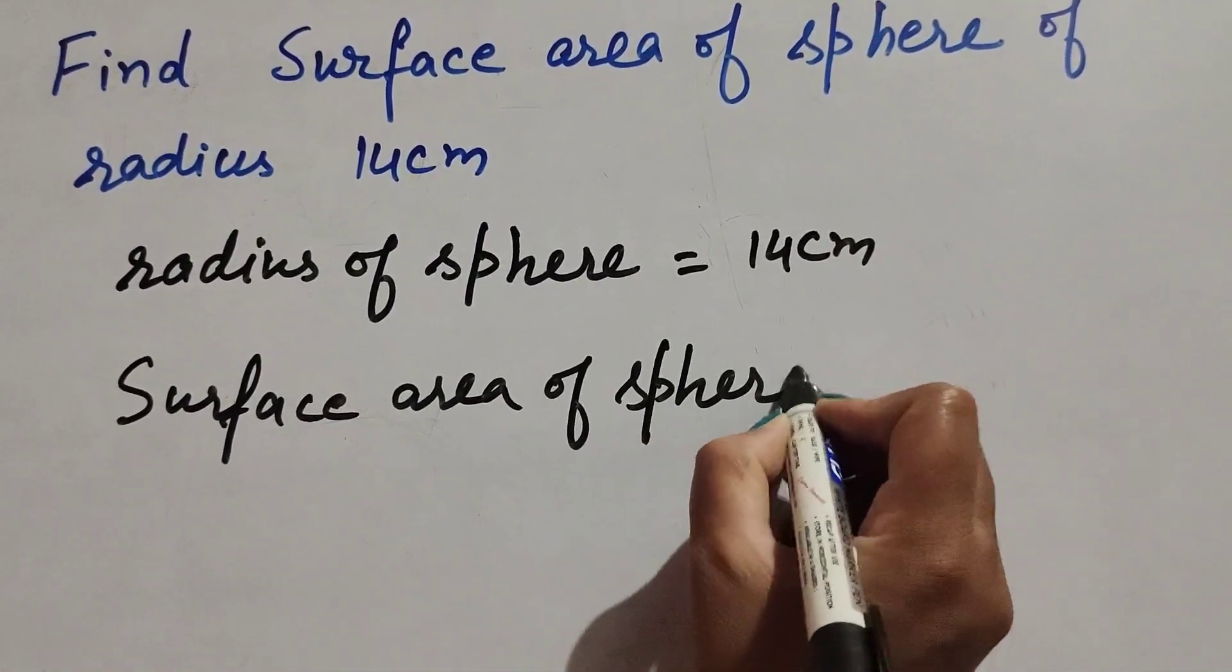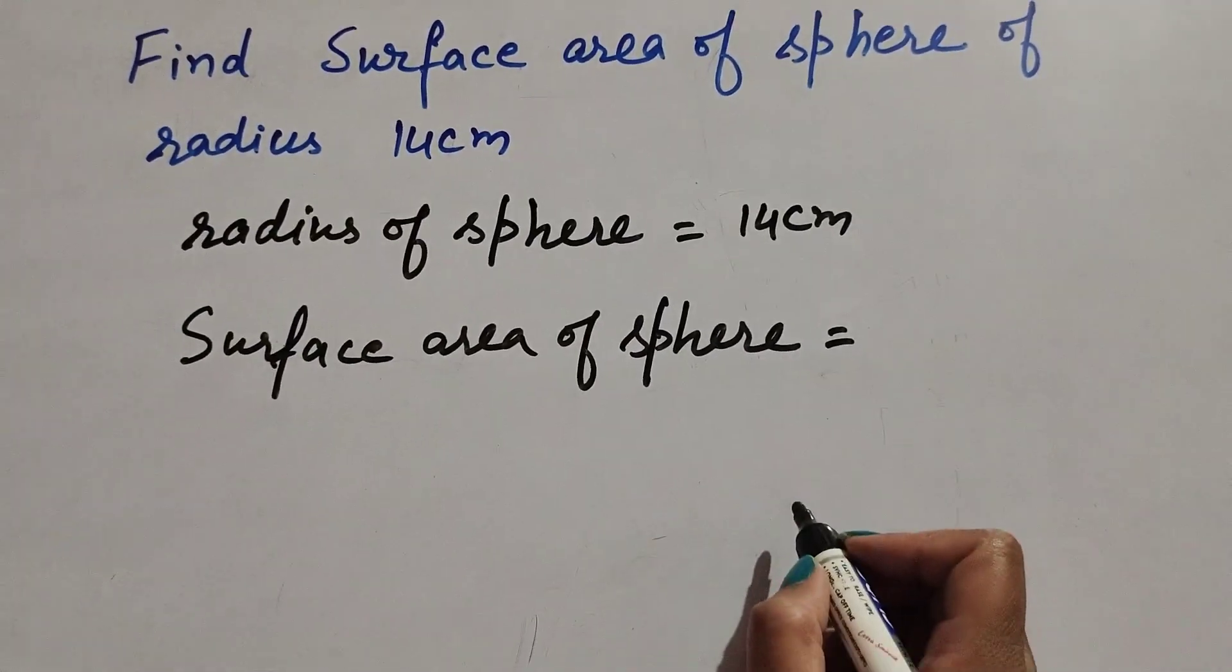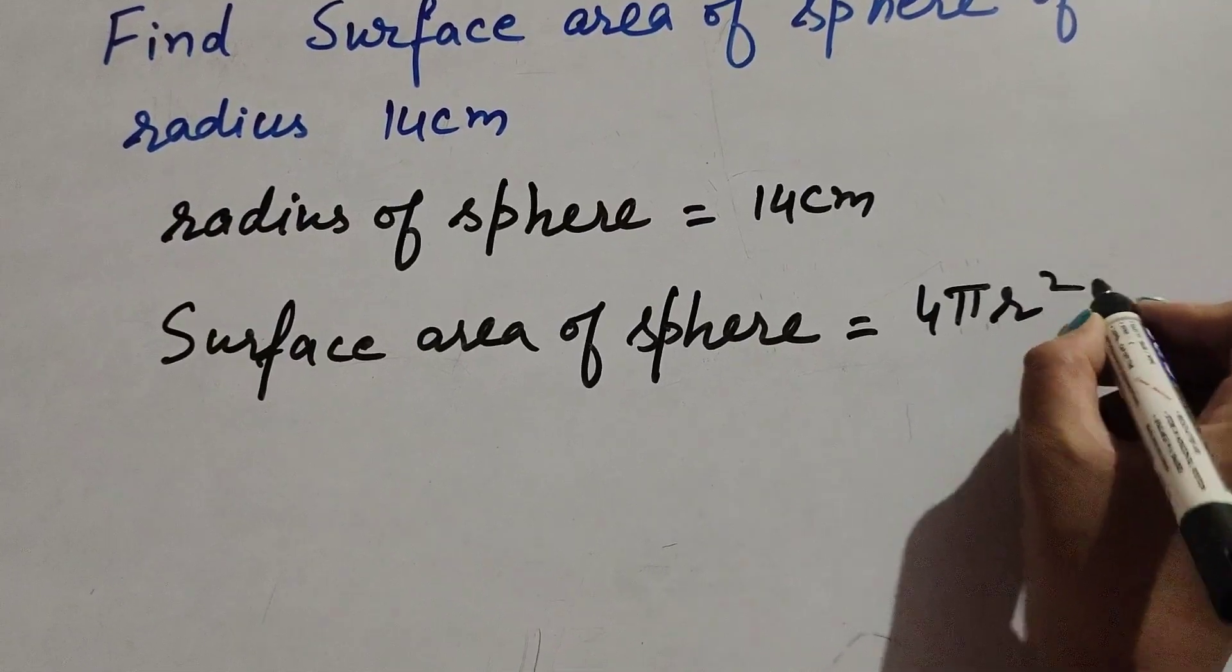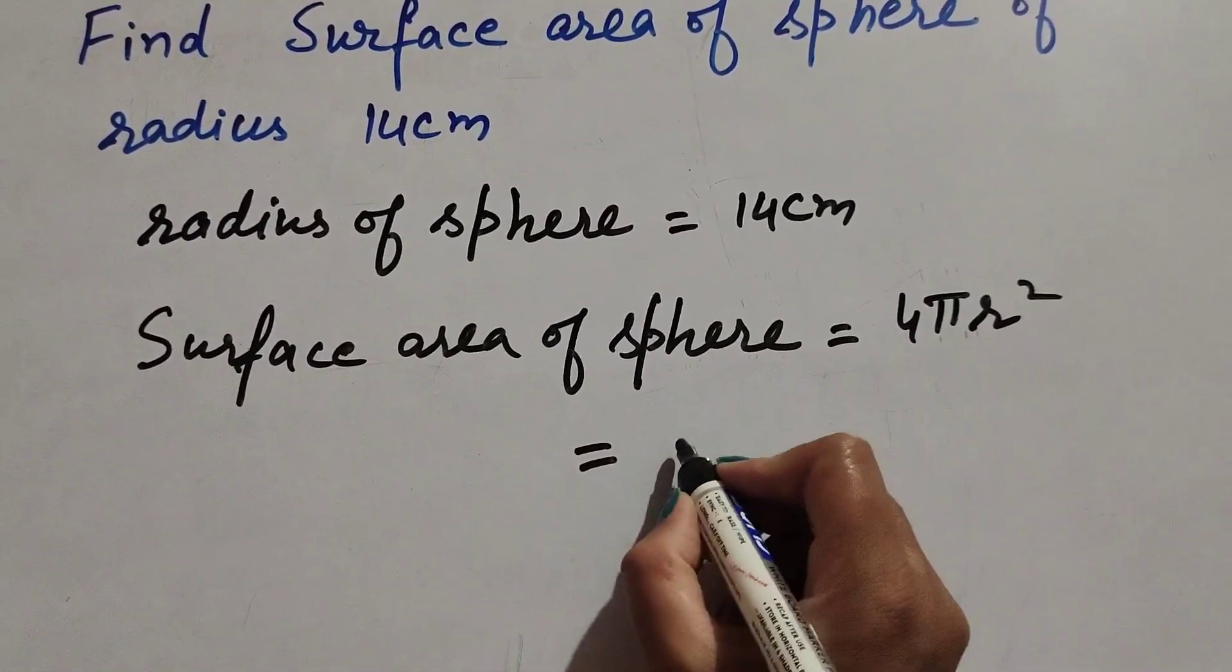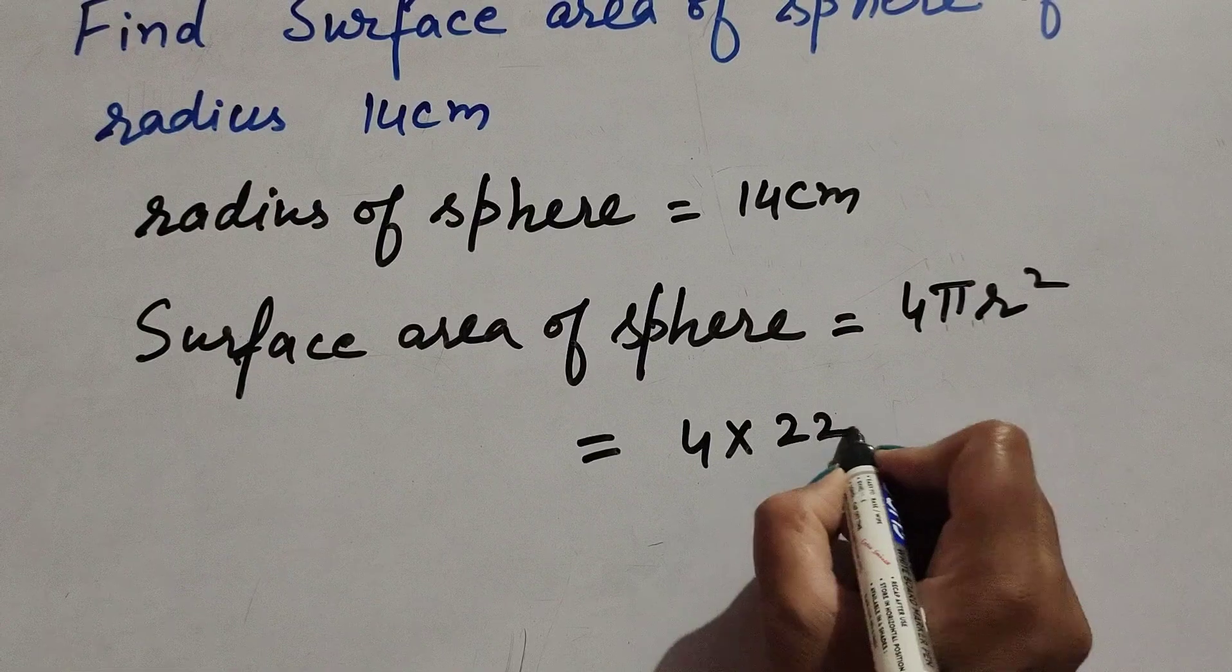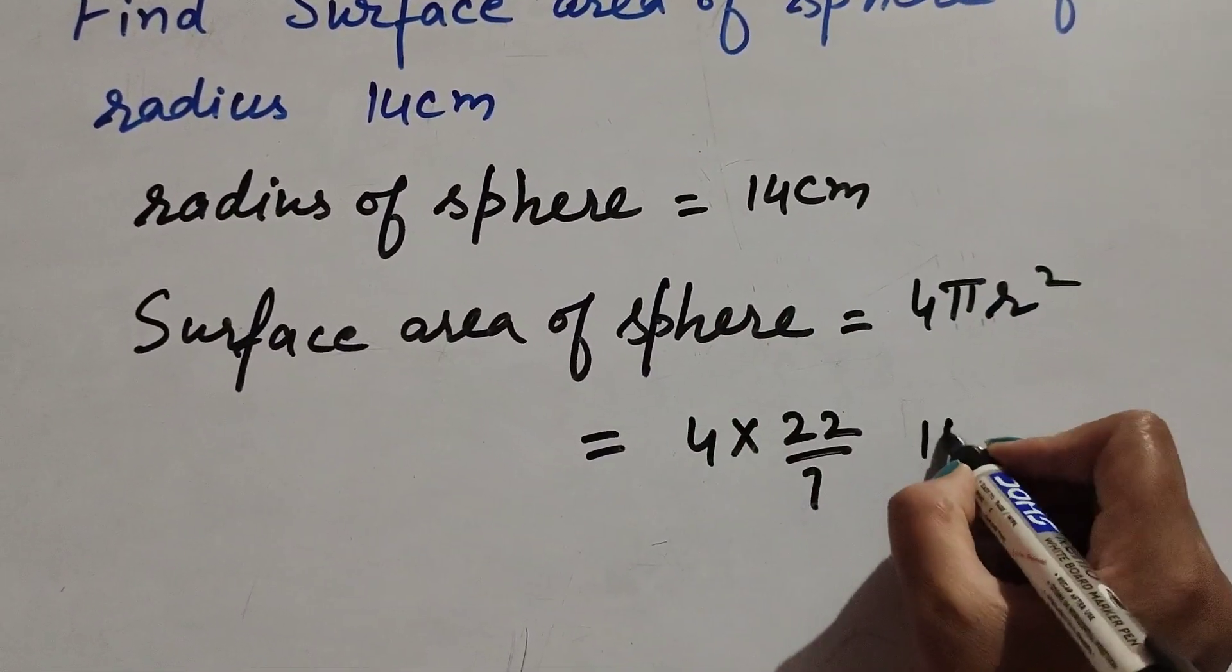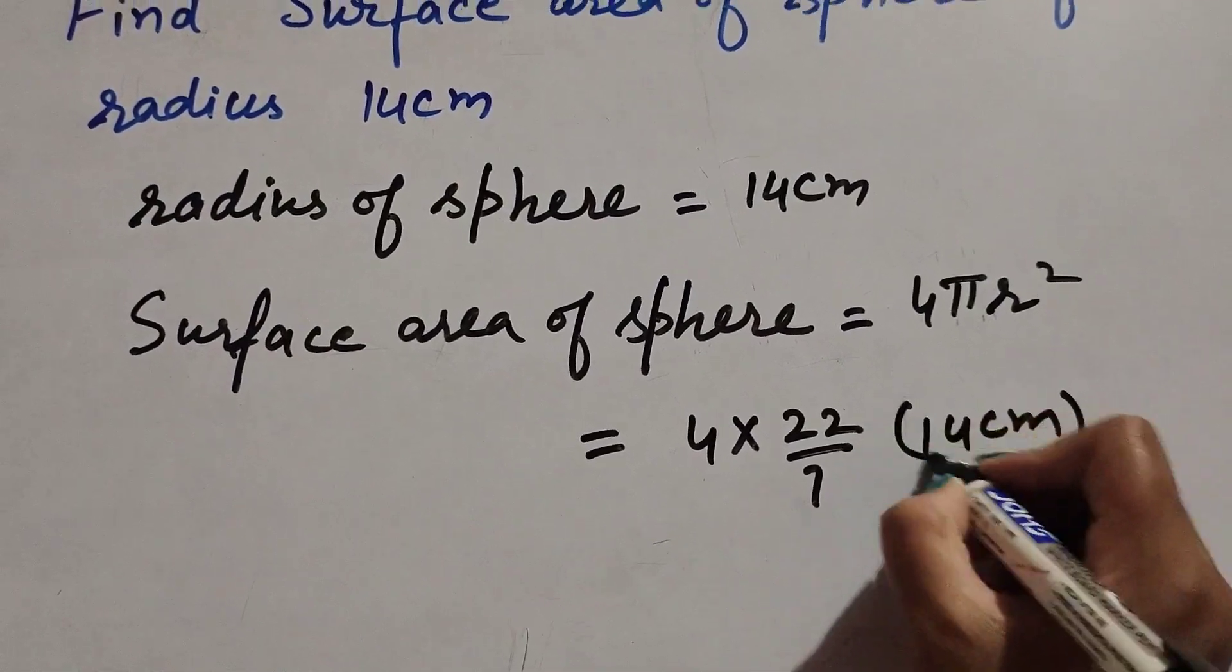We know the formula to find surface area of sphere is 4πr². This equals 4 × 22/7 × r², where r is the radius, 14 cm, squared.